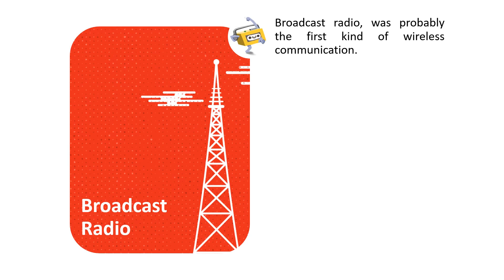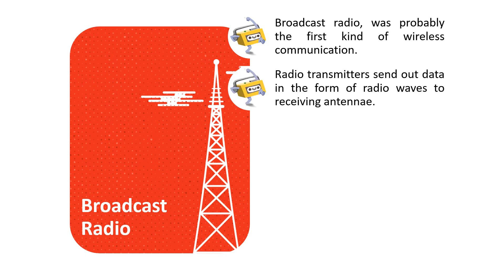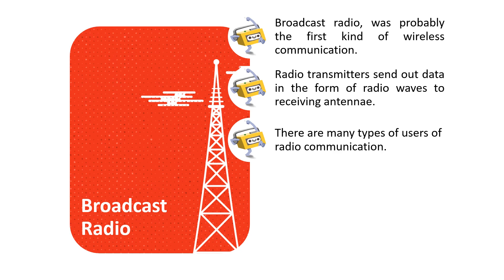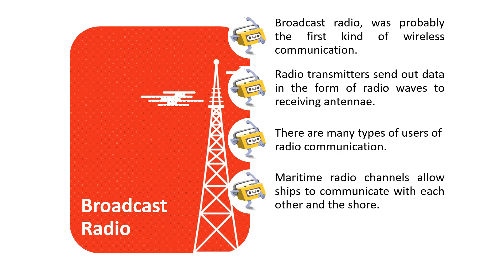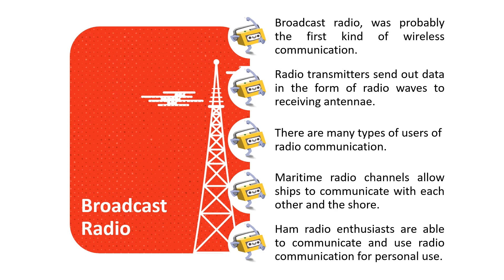The next type of wireless communication is broadcast radio, which was probably the first kind of wireless communication. Radio transmitters send out data in the form of radio waves to the receiving antenna. There are many types of users: maritime radio channels allow ships to communicate with each other, and ham radio enthusiasts are able to use radio communication for personal use.